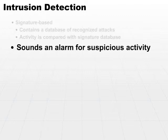The problem with signature-based IDSs is that they may sound alarms for normal activity that just might look suspicious. But worse, if there's a brand new attack that just hit the streets today that does not exist in the signature database, that attack may very well be totally ignored, not even caught at all.